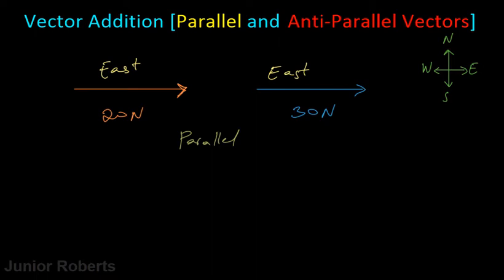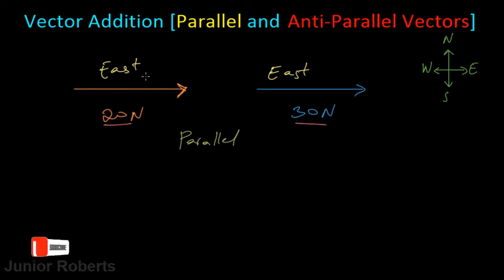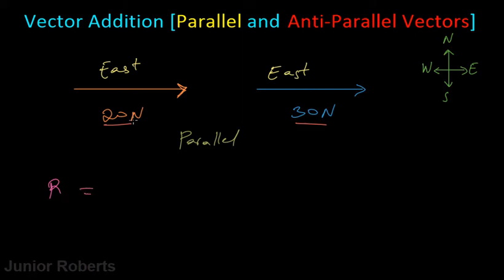The question now is how do we go about adding these two vectors? We know that vectors have a magnitude given by these values and a direction indicated by the arrowhead. If we want to add these two vectors, we consider the sum of these two vectors. Our resultant R is equal to the sum of F1 and F2 — we'll call this F1 and this F2 because we have two force vectors.